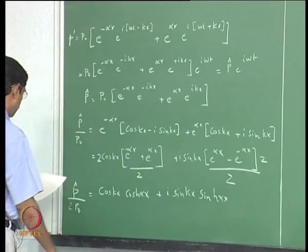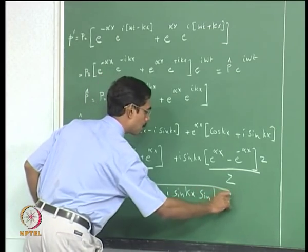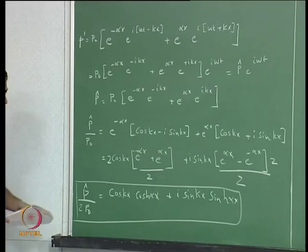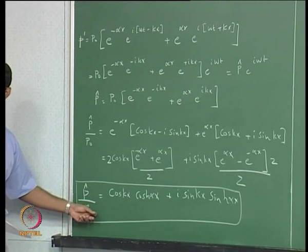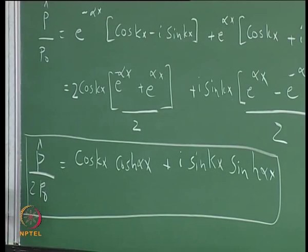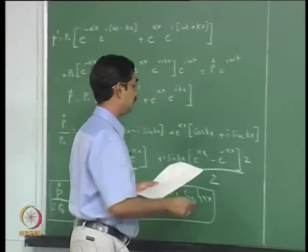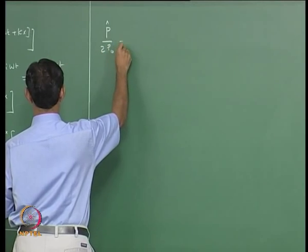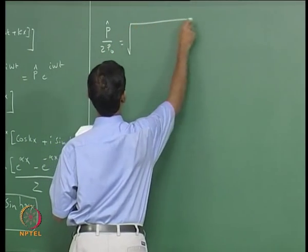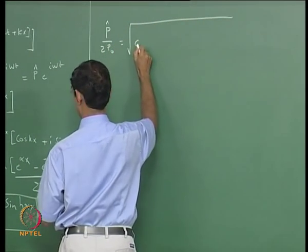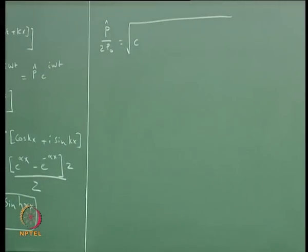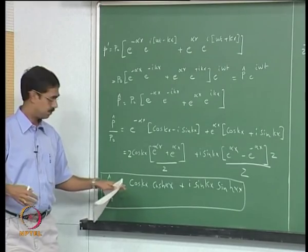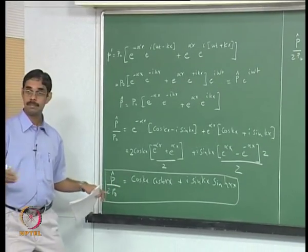This is a neat result. From this it is quite trivial to get the actual amplitude of this complex number and the phase. We just write the amplitude: the magnitude of p hat over 2 p naught equals the square root of the sum of squares of the real and imaginary parts, which is the same as square root of p hat times p hat conjugate.